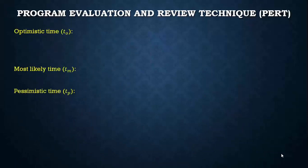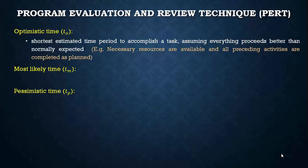The different time estimates are optimistic time, most likely time, and pessimistic time. Optimistic time is the shortest estimated time period to accomplish a task, assuming everything proceeds better than normally expected. Example cases include when all necessary resources are available and all preceding activities are completed in time as planned.